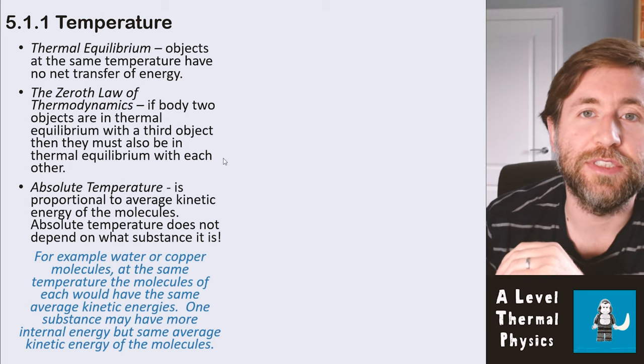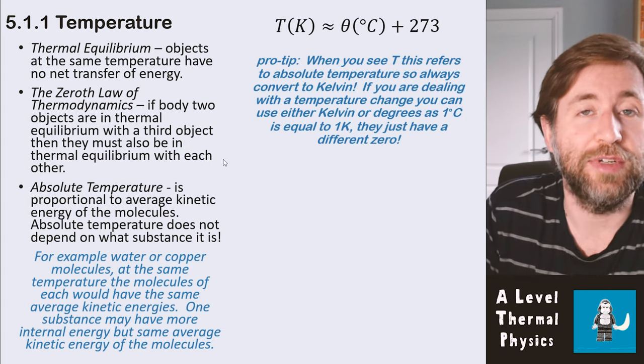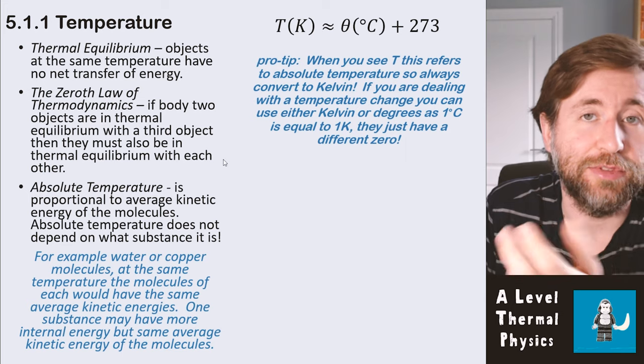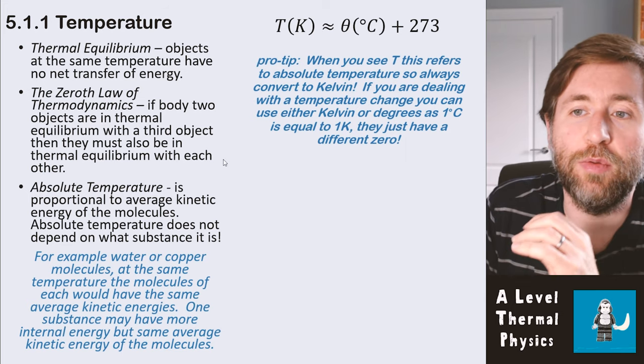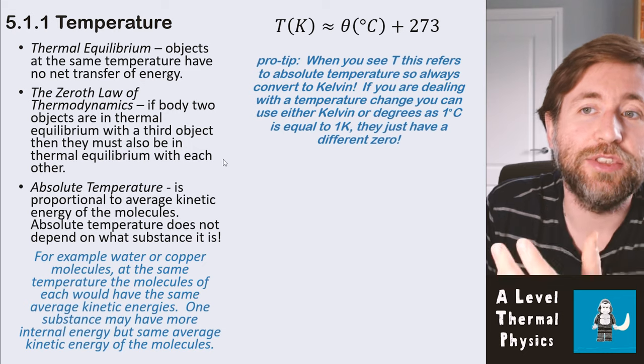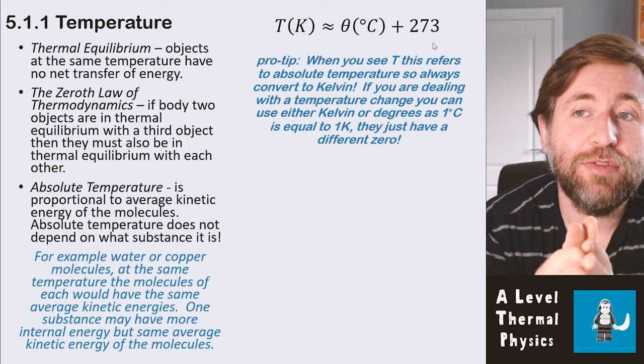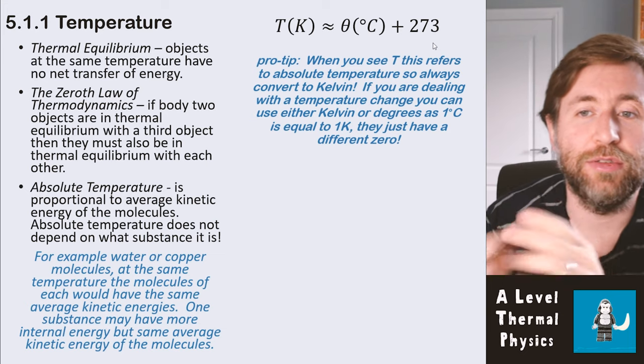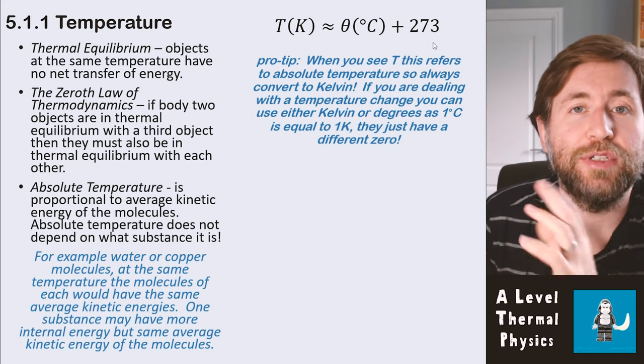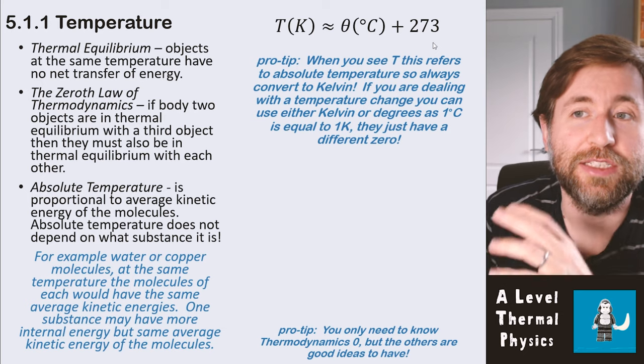That's a really key idea in physics. So you always need to convert to Kelvin. If you are seeing the capital T absolute temperature now, one degree Kelvin is equal to one degree Celsius. You just need to take the value in Celsius and add 273. Kelvin is a scale from absolute zero and absolute zero is minus 273 degrees Celsius.